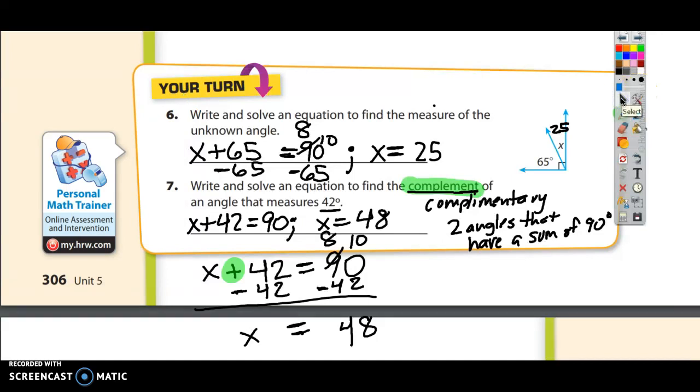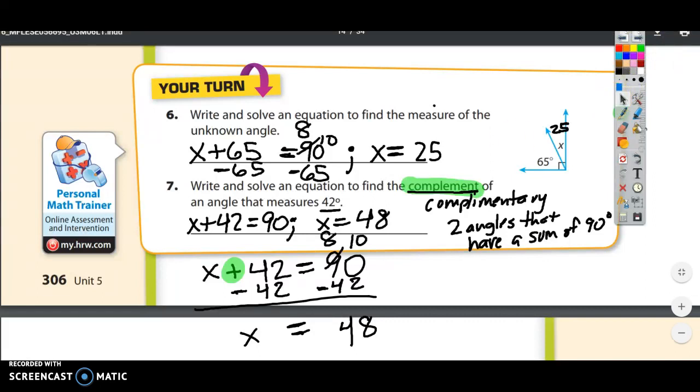So what you've learned on this page is you've learned what supplementary and complementary angles are. Supplementary angles are two angles that add up to 180 degrees. Complementary angles are two angles that add up to 90 degrees. And you learned how we can write equations and solve equations out of those kinds of problems. Good job. You are done with page 306.